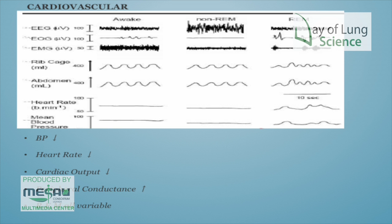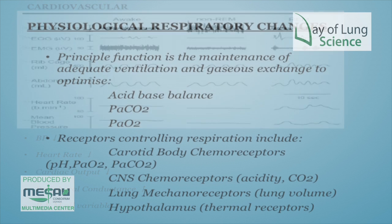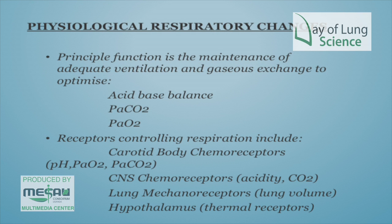Physiological and respiratory changes: acid-base balance changes slightly, PCO2 — the acid buffer — and oxygenation both change. The receptors controlling this are in the carotid body chemoreceptors, the aortic arch, CNS receptors in the brain, lung mechanical stretch receptors, and thermal receptors in the hypothalamus.